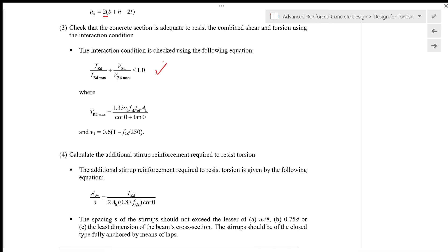The fourth step in our calculation is to calculate the additional stirrup reinforcement required to resist torsion. The additional stirrup reinforcement required to resist torsion is given by the following equation: ASW/S = TED/(2AK × 0.87 fyk cot θ).